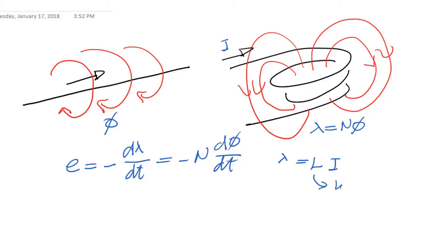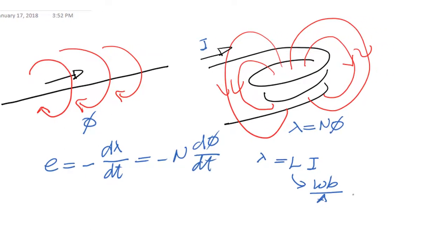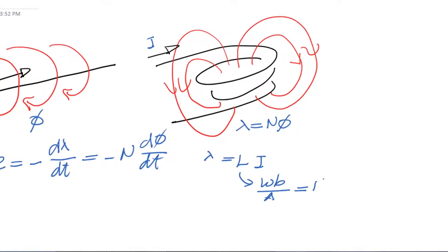L is a coefficient of proportionality. The units: Weber's created of flux linkage for every ampere. And that unit, we've given it a name, that is the Henry. When you say that the inductance of a device is, for instance, 0.01 Henry's, that is 0.01 Weber's per ampere. What that's telling you is that for every ampere that flows through that device, you get 10 milliWeber's of flux linkages.